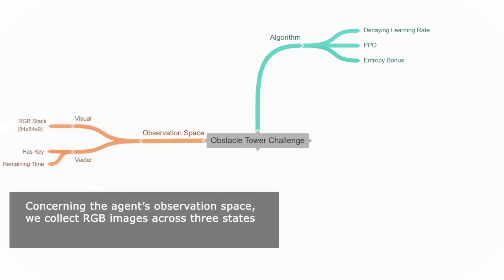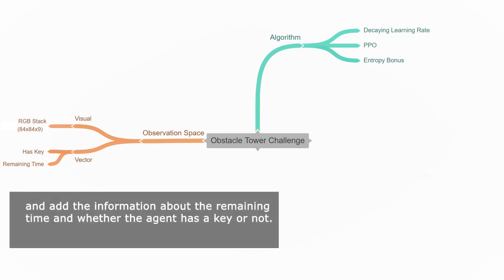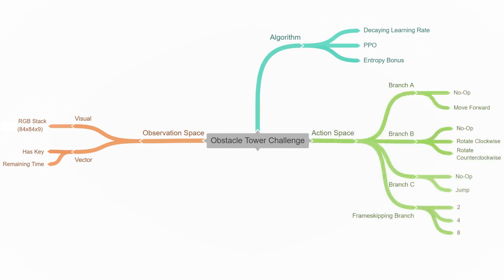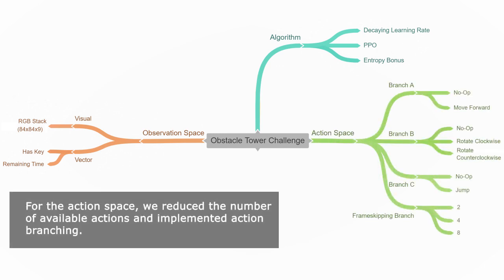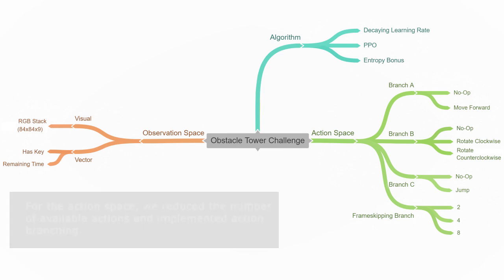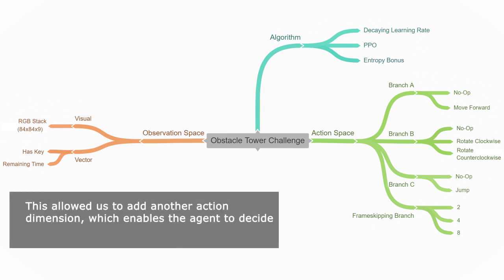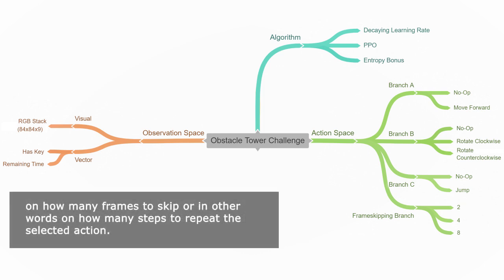Concerning the agent's observation space, we collect RGB images across three states and add information about the remaining time and whether the agent has a key or not. For the action space, we reduced the number of available actions and implemented action branching. This allowed us to add another action dimension which enables the agent to decide on how many frames to skip, or in other words how many steps to repeat the selected action.